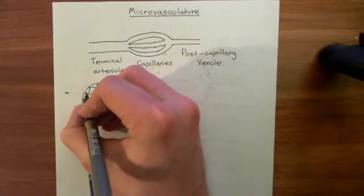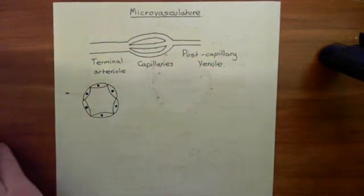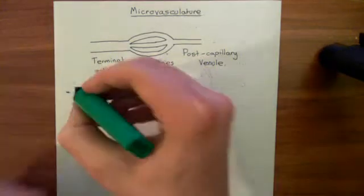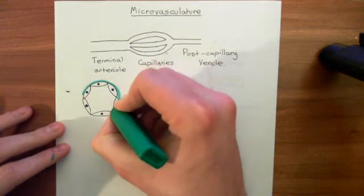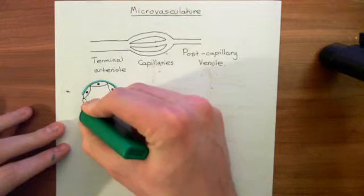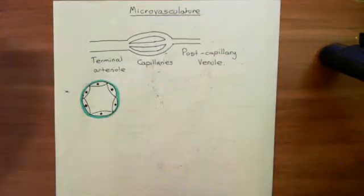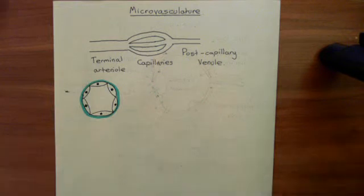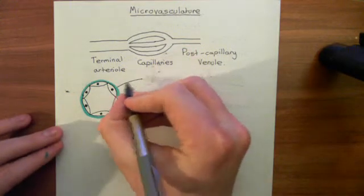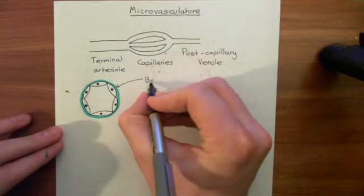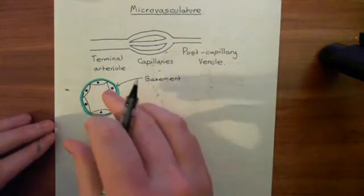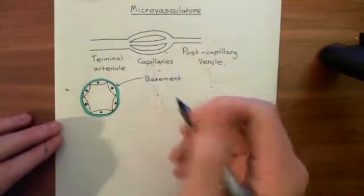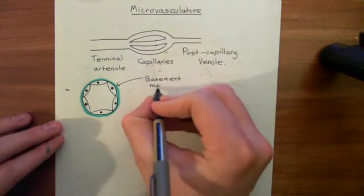These endothelial cells sit on a basement membrane, which I'll color in turquoise. The basement membrane is a membrane of protein — it consists mainly of collagen, but also has other proteins such as laminins and fibrillin, which are important components. This gives structural support to the endothelial cells. The endothelial cells are held in their shape because they're attached to this rigid structure, which is the basement membrane.